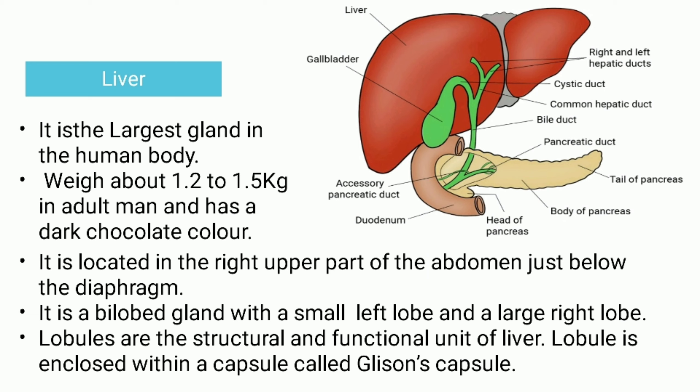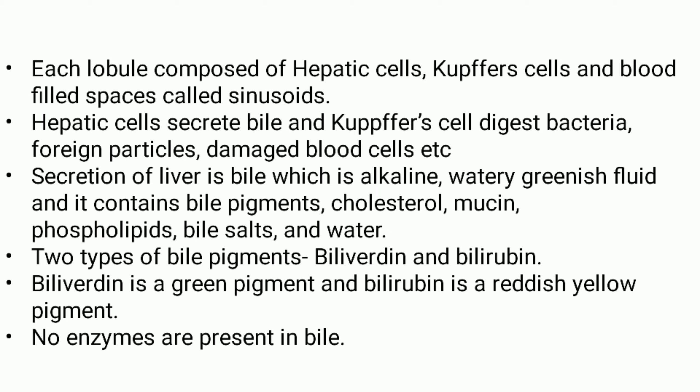A small sac-like structure present near the liver is known as the gallbladder. A duct arising from the gallbladder is known as the cystic duct. The cystic duct and the hepatic duct fuse to form the common bile duct. Each lobule is composed of hepatic cells, Kupffer cells, and blood fluid spaces called sinusoids. Hepatic cells secrete bile, and Kupffer cells digest bacteria, foreign particles, and damaged blood cells.